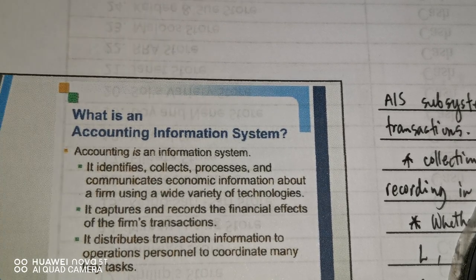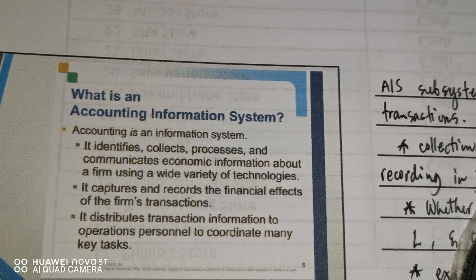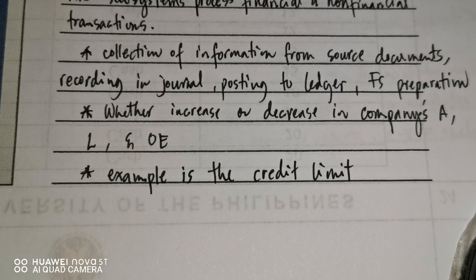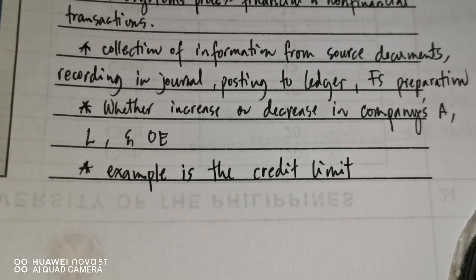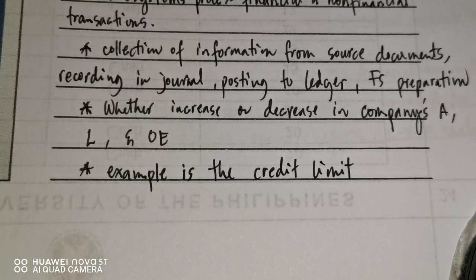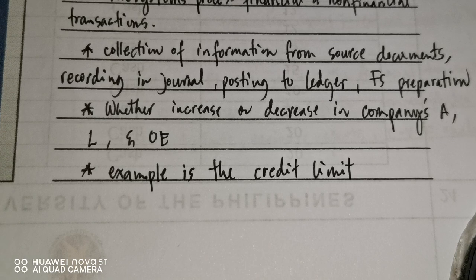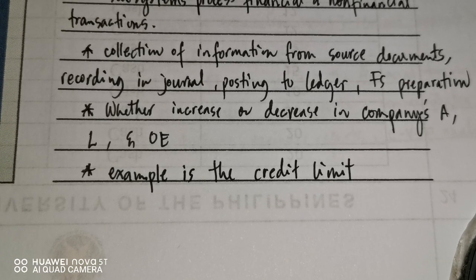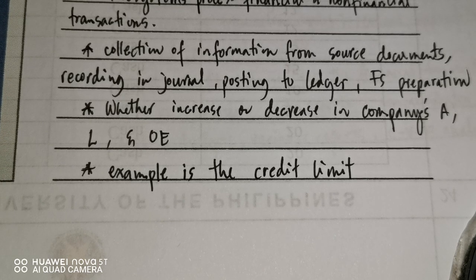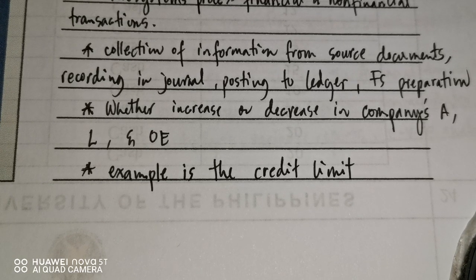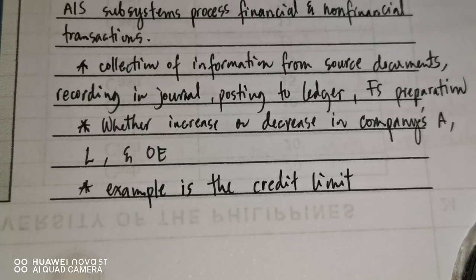The AIS also distributes transaction information to operations personnel to coordinate key tasks. One example is credit limits: when a customer wants to purchase on account, the sales representative must check the accounting information to see if that customer has already reached their maximum credit limit before approving the transaction. That is how accounting information aids operations personnel.